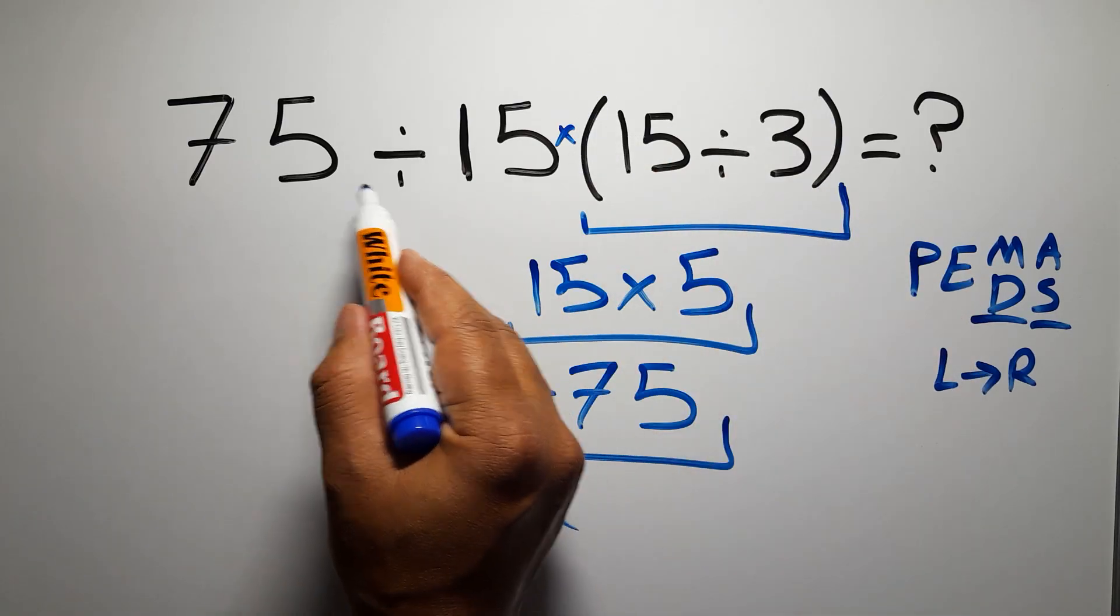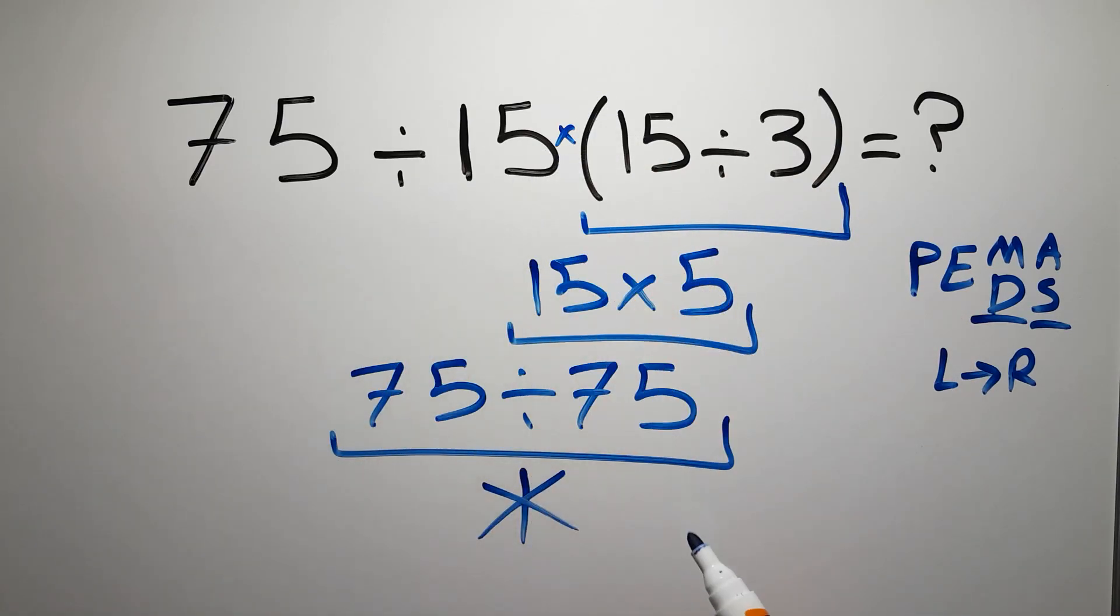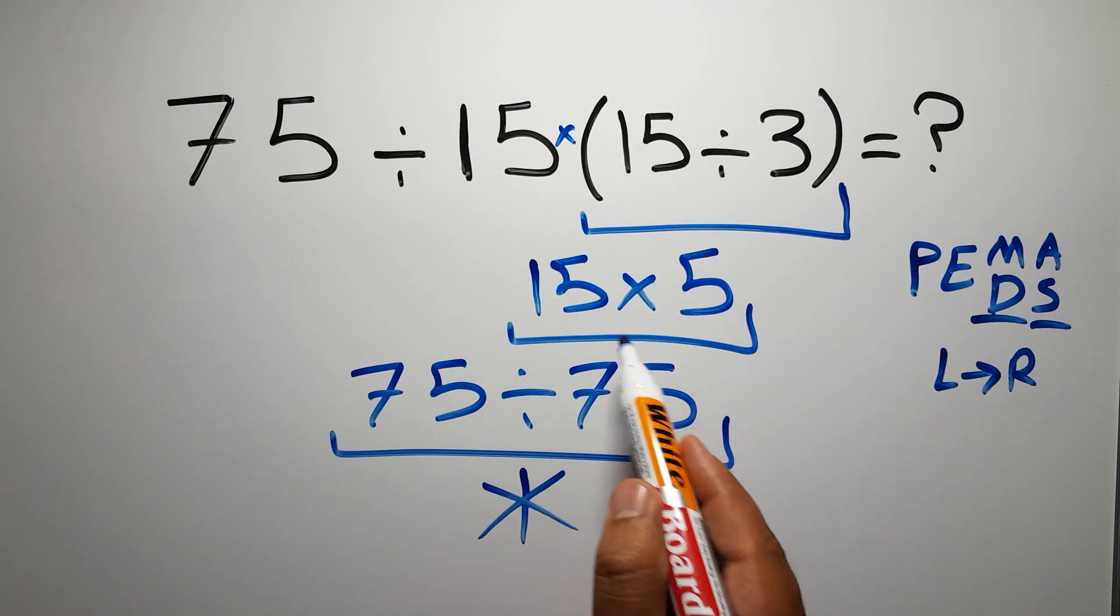So first these parentheses, then this division, and finally this multiplication. If you do this multiplication before this division, it is wrong.